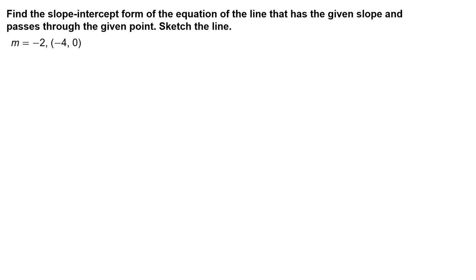Find the slope-intercept form of the equation of the line that has the given slope and passes through the given point. Sketch the line. The line has slope m equals negative 2 and passes through the point negative 4, 0.